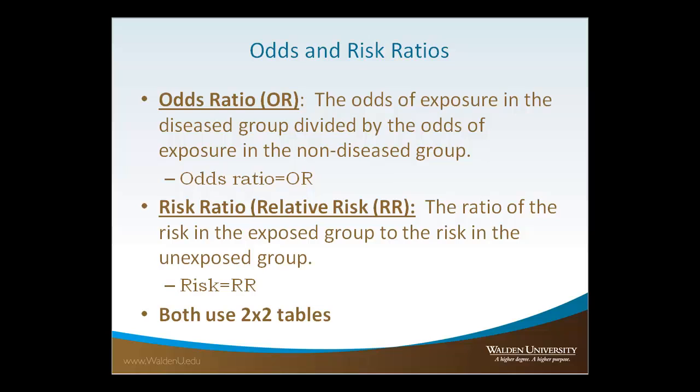The odds ratio and risk ratio are very similar. The odds ratio is the odds of exposure in a disease group divided by the odds of exposure in the non-disease group, while the risk ratio is the ratio of the risk in the exposed group to the risk in the unexposed group. Both of these use two-by-two tables, so let's take a closer look.